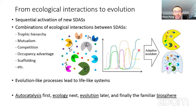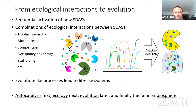With the SIDAS theory, the presence and integration of different life-like features can be unified under a common framework. We propose that the origin of life is a process like this: first, sequential activation of new SIDAS generates a chemical ecosystem where multiple life-like features such as trophic hierarchy, neutralism, competition, and occupancy advantage may arise. Then these ecological interactions result in evolution-like dynamics, gradually making the reaction system more life-like due to adaptation. Finally, primitive forms of life emerge. Or remember the framework as: autocatalysis first, ecology next, evolution later, and finally the familiar biosphere.